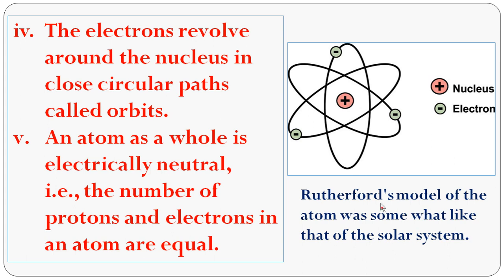To recap: the atom contains a large empty space; the positive charge is at the center called the nucleus; electrons revolve around the nucleus in circular paths called orbits or shells; and the atom is electrically neutral because the number of protons and electrons are equal. The Rutherford atom model is similar to the solar system — in the solar system the sun is at the center and planets revolve around it, similarly the nucleus is at the center and electrons revolve around the nucleus.